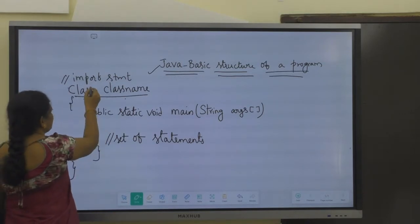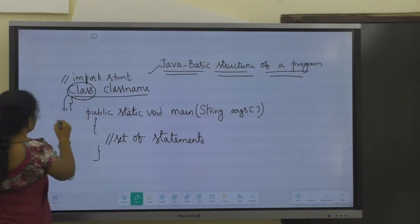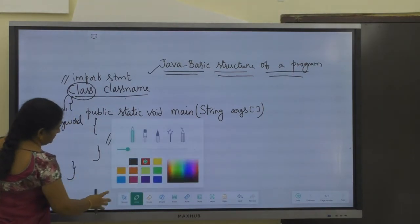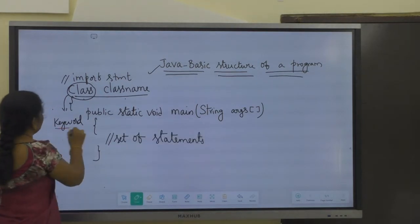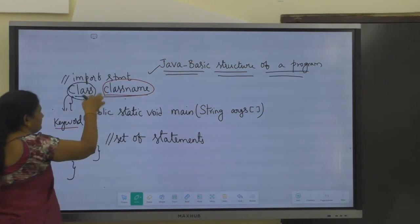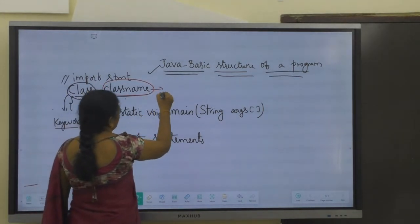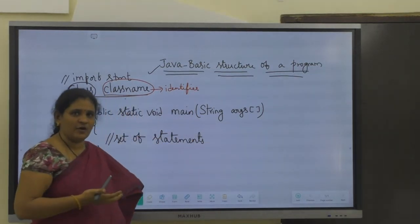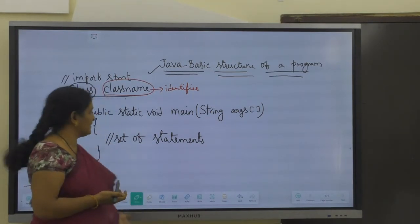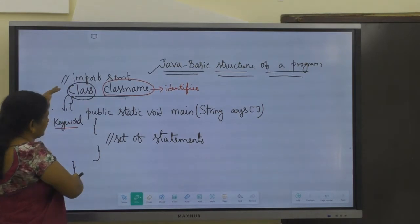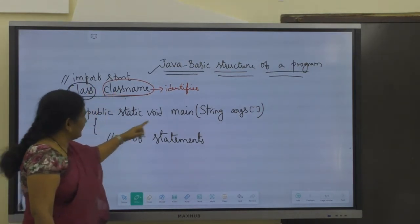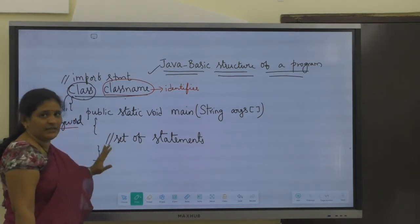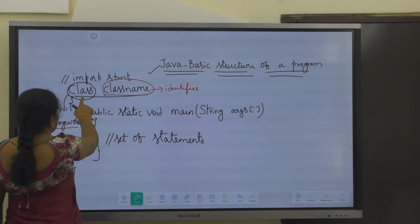In Java, whatever methods, variables, or logic you write should be enclosed within the class only. We start with class — that is a keyword — followed by the class name, which is an identifier. The user can define whatever name he or she likes. Usually a basic Java program looks like: class, class name, open the flower bracket, write the main method inside, write the logic inside the main method, then close the main method and close the class.